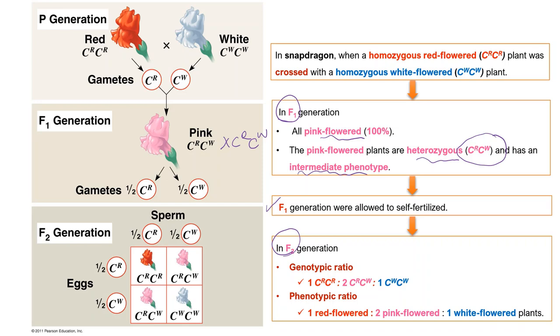So the ratio here is 1:2:1, and not the 3:1 ratio that we would normally get in monohybrid inheritance.